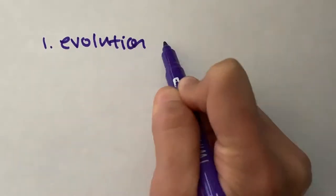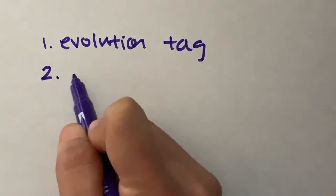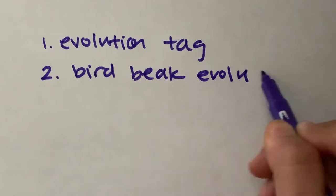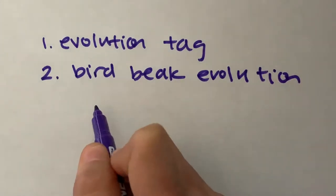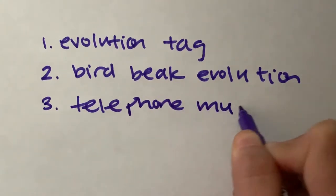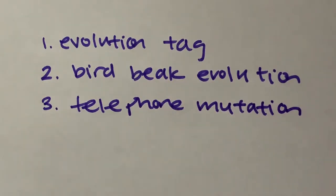Through evolution tag, which will help explain the evolution of species; bird beak evolution, which will help explain adaptations and how they attribute to evolution of certain species; and telephone mutation, which will help explain how mutations or changes in our genes can attribute to changes in evolution.